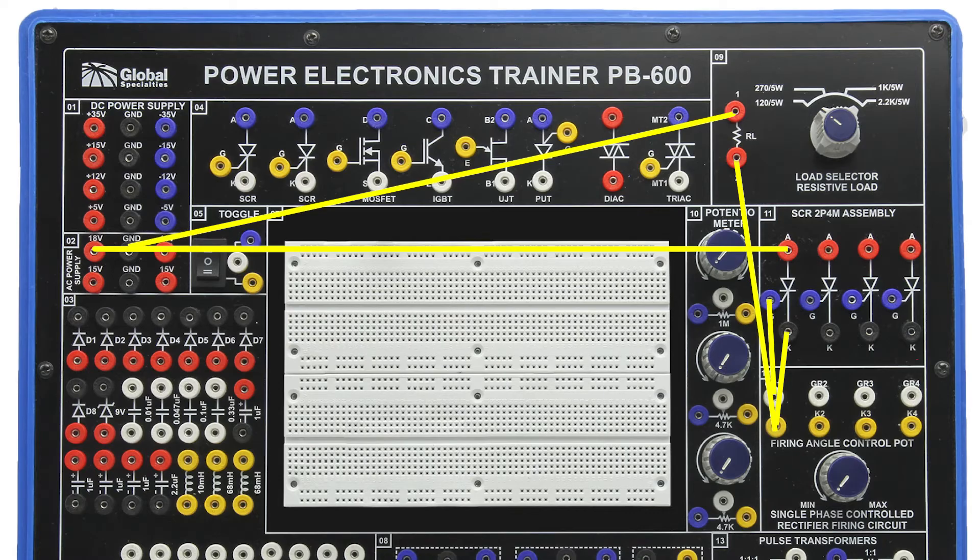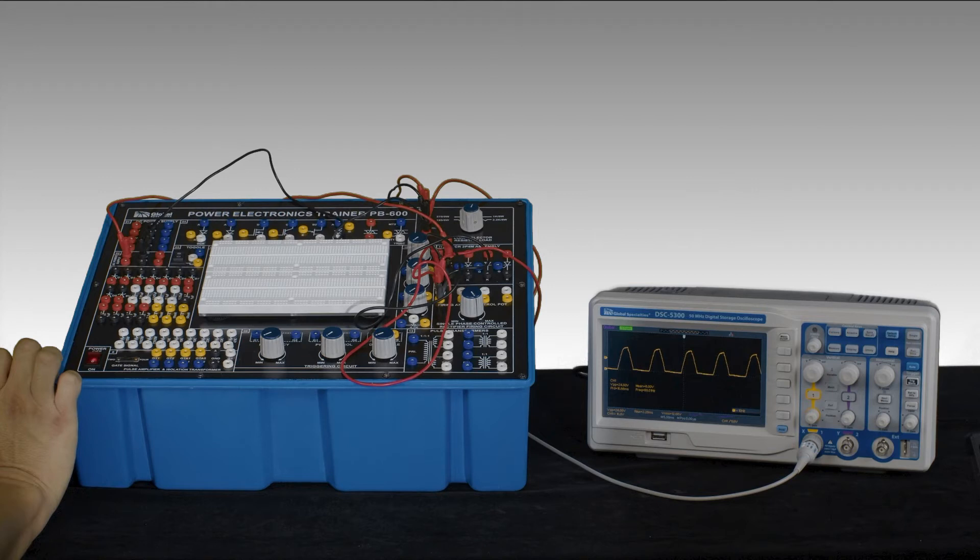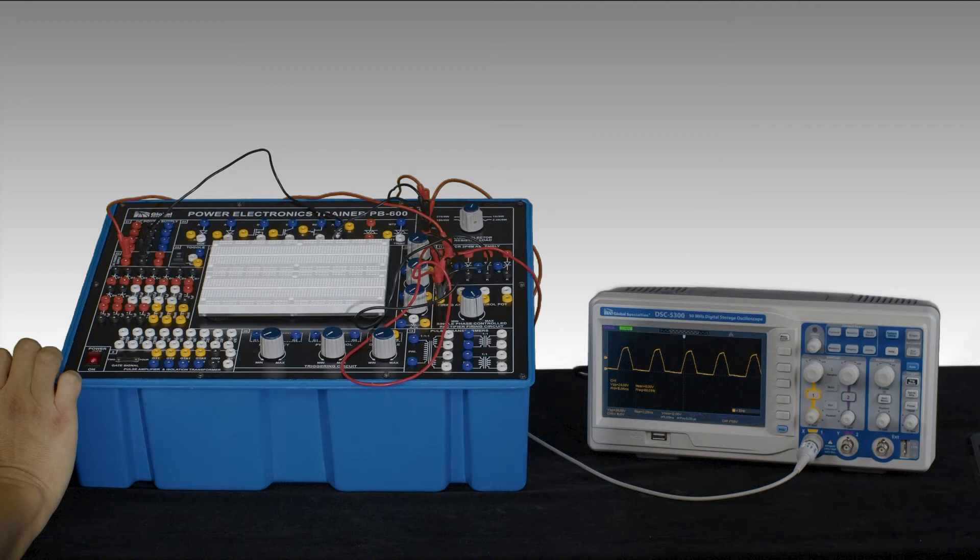This is where it's going to be sending the signal. If we focus on the oscilloscope, you'll see you've got half waves. What's happening is the SCR is conducting whenever the voltage is positive. Now when it becomes negative, the current through the SCR falls below the holding current, at which point the SCR just shuts off. And those are the flat lines you see.